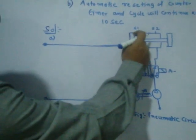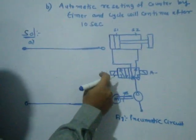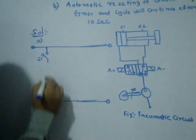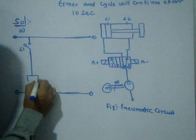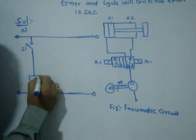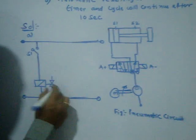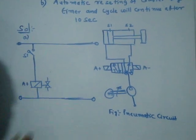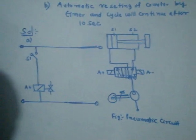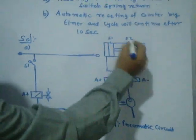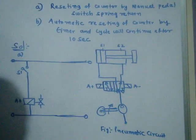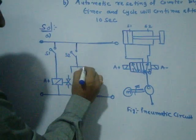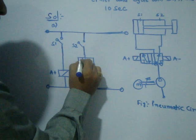When the piston is at S1, A plus should turn on. A plus means the solenoid — without relay, I am controlling it directly; that is called A plus. This is the symbol of the solenoid, A plus. When it goes to S2, the counter has to count how many times the piston has come. So when it goes to S2, the counter — this is the symbol of the counter — it counts the pulses, say C. You can give any name.